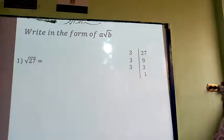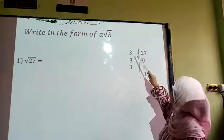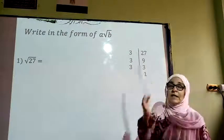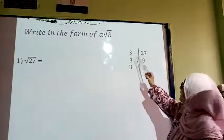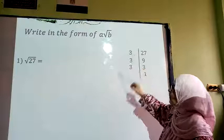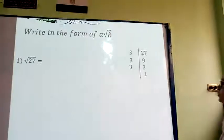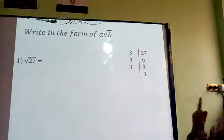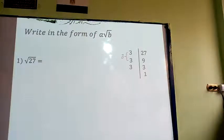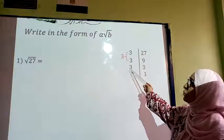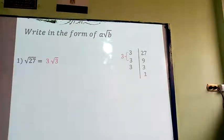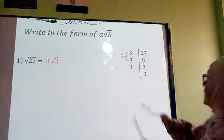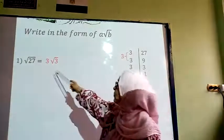Now under the square root I have 3 numbers (three 3s). I can take only one of them outside the root. So I am going to take one 3 outside, and the remaining 3 has to stay under the root like this.